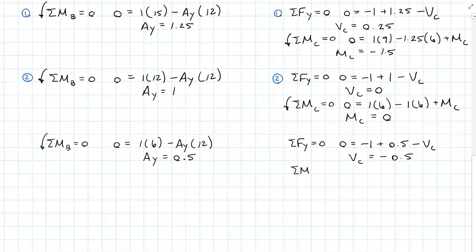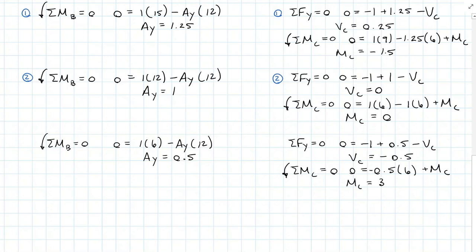Summing moments about point C, I will have A_Y of 0.5 acting at 6 feet from C clockwise, plus my moment at C. So my moment at C will now equal 3 times the influence of that unit load.